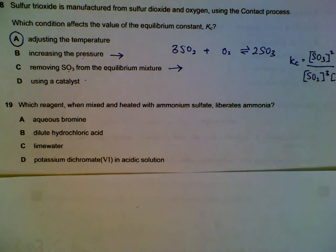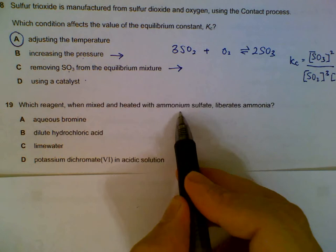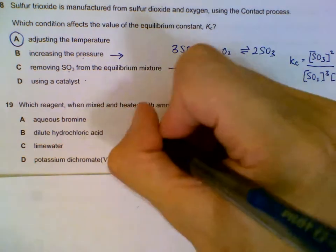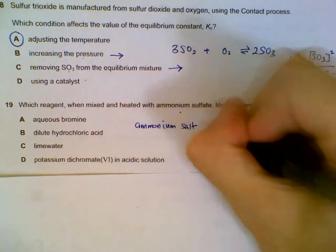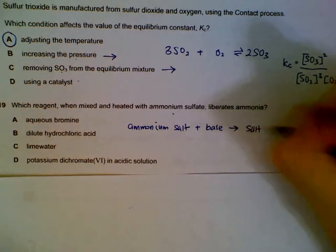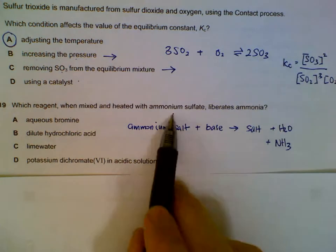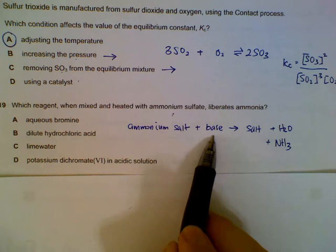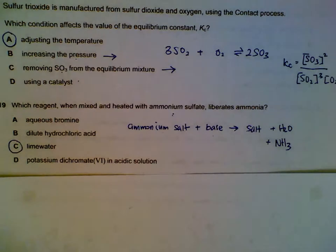When mixed with ammonium sulfate, it produces ammonia. Ammonium sulfate is an ammonium salt, and an ammonium salt and an alkali will give off salt, water, and ammonia gas. When we heat them up, we get salt, water, and ammonia gas. So we have an ammonium salt here, and we need to look for a base among all of them. Limewater, which is a base, calcium hydroxide.